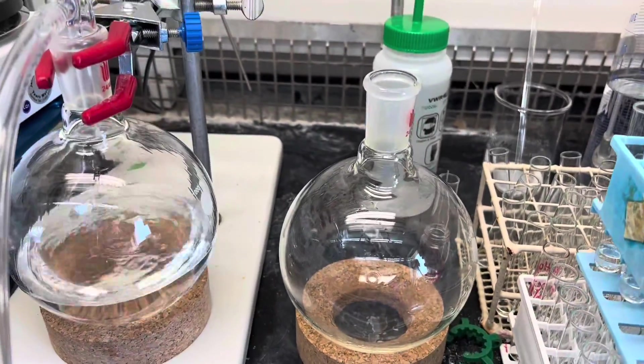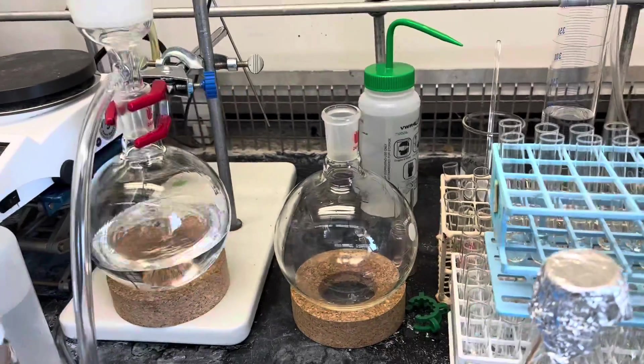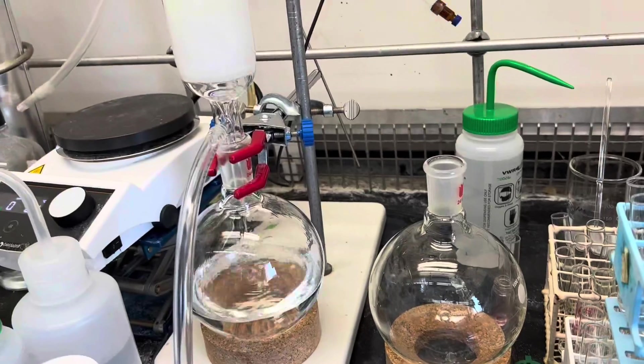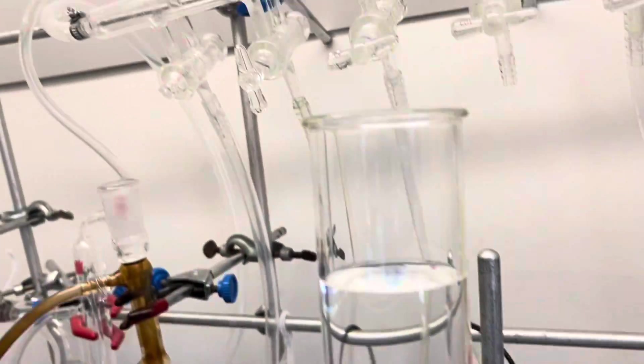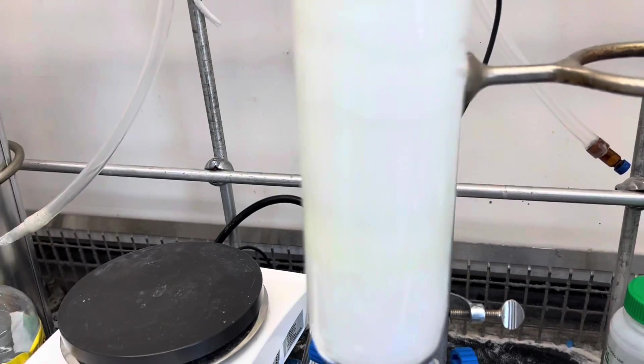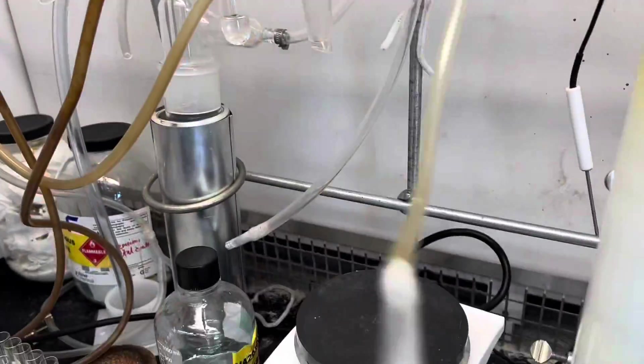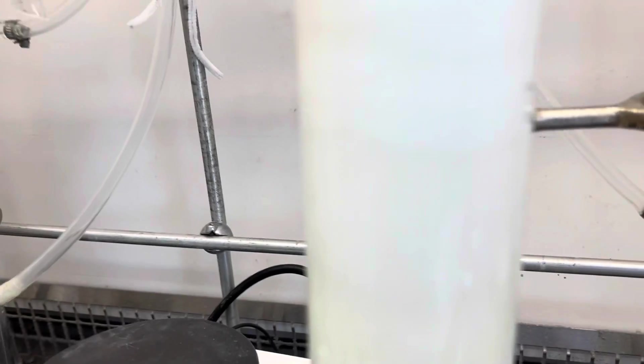Here I am collecting this liquid first as a first fraction and I have kept another flask ready to collect for the next fractions. Once this solvent layer collection is done then I'll remove the vacuum tube and close the vacuum for a minute and then change the column to another flask.